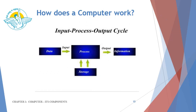How does a computer work? It works on the input process output cycle. The raw data is input into the system using input devices, which is further given for processing. The processing devices process the raw data and produce meaningful information. This meaningful information is given to the output devices for display, and the storage devices in turn store the intermediate and processed data.